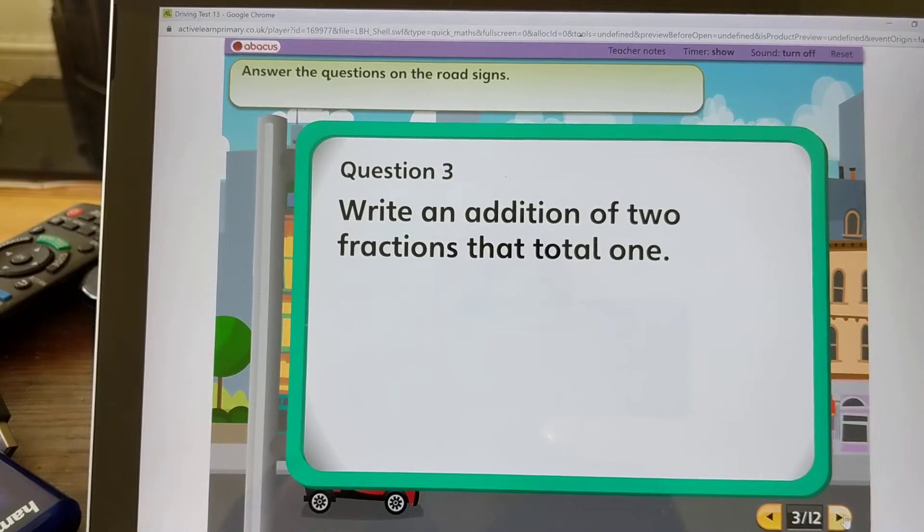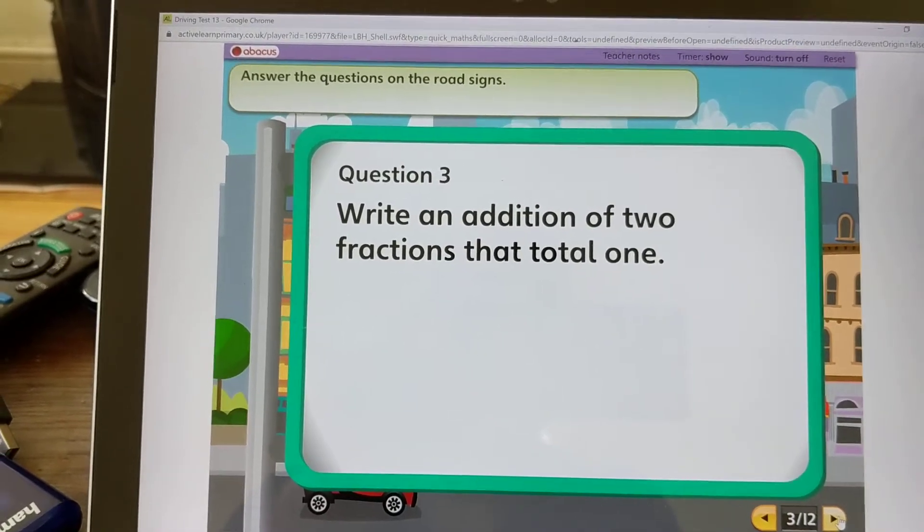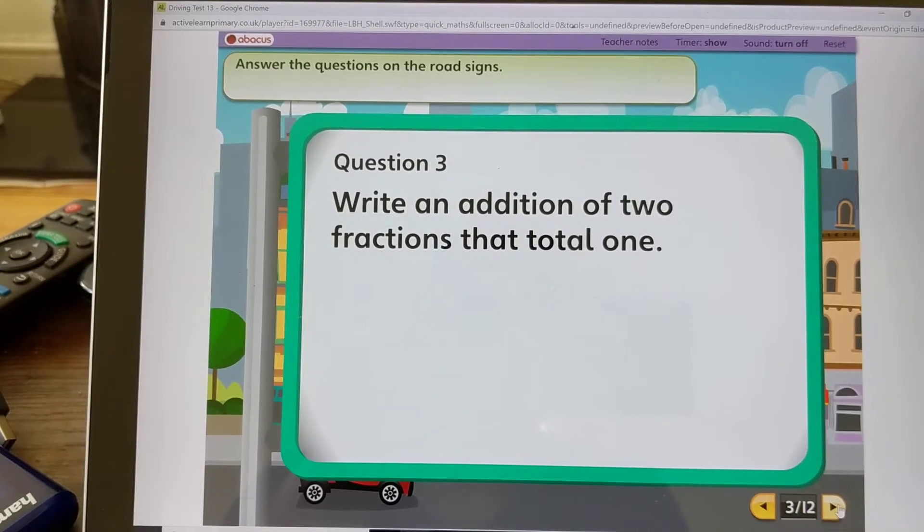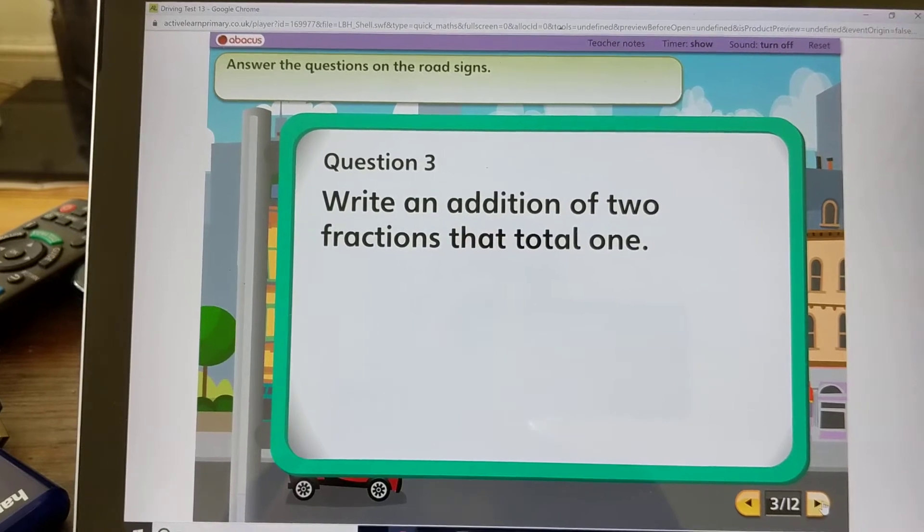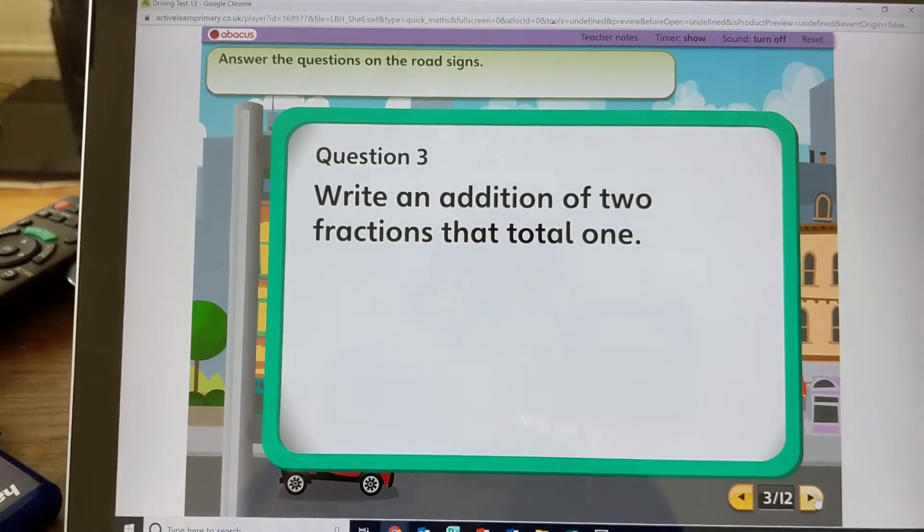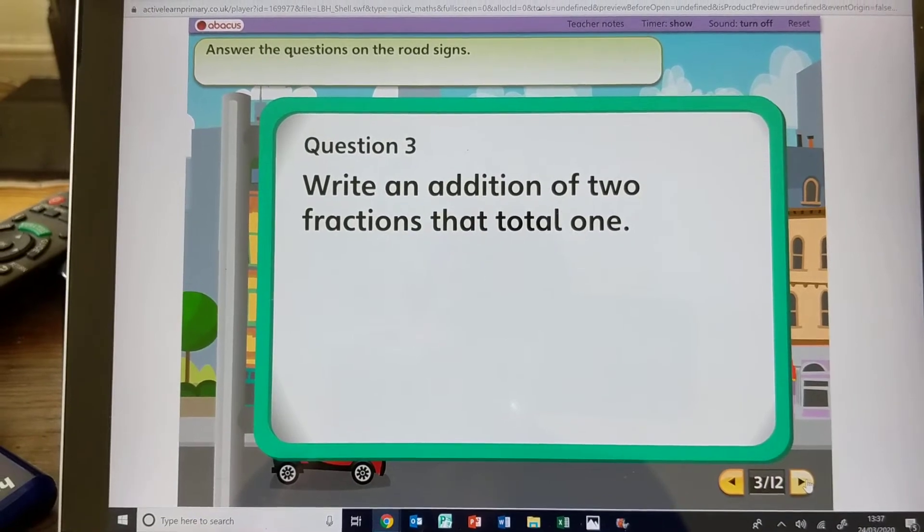Question 3: Write an addition of two fractions that total one. So both of these fractions when added together will give you the answer of being one whole one. From now on, anytime you need more time to answer the questions just pause the video.